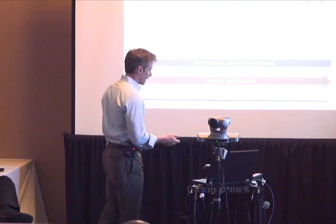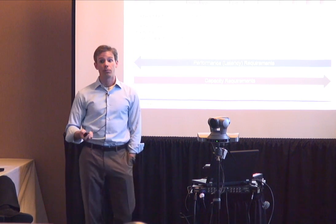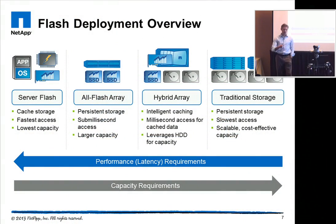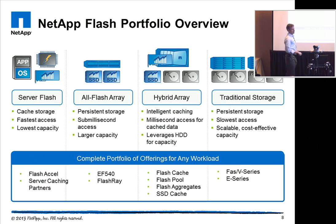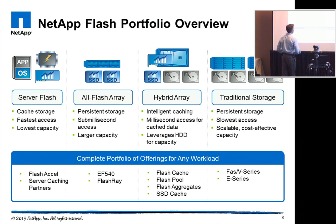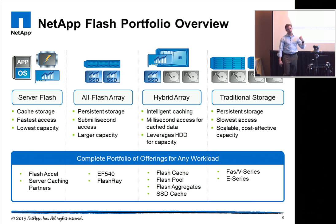These are the things we look at as we figure out what we want to deploy into customers' environments and what the overall portfolio needs to look like. For us, it's not one solution fits all — it truly is a mix. We need to offer a portfolio of solutions so customers can make the right choice based on their deployment criteria. We offer hybrid arrays with our FAS, V-series, and E-series systems, all-flash arrays where necessary, and alliances within the server caching side to offer end-to-end Flash functionality.